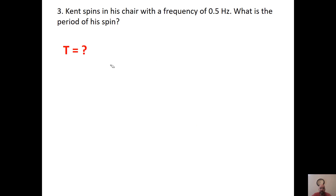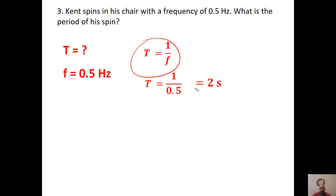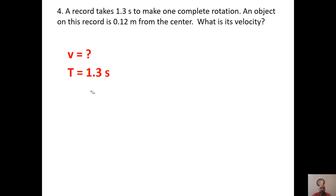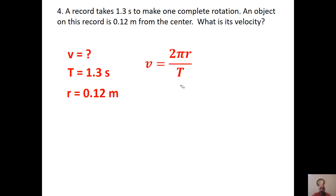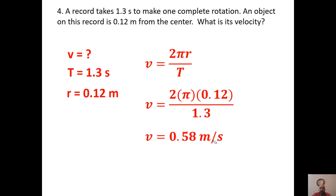Ken spins his chair with a frequency of 0.5 Hz — the period is just the inverse: 2 seconds. A record takes 1.3 seconds to complete one rotation — that's capital T, not little t — with an object 0.12 meters from the center. Plug into v = 2πr/T and you get 0.58 meters per second. Make sure you don't forget the pi.